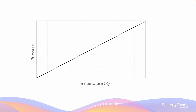Here we can see a positive relationship between pressure and temperature in Kelvin. The gradient is positive, indicating a positive correlation between the variables, which are directly proportional. Notice that the pressure is zero when temperature in Kelvin is equal to zero.